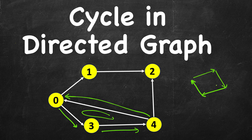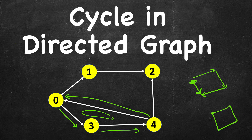If this graph is directed, then it is cyclic. But if we change one of the arrows, it's no longer cyclic. In the undirected case, that is not the case — we don't care about direction, it's always cyclic.